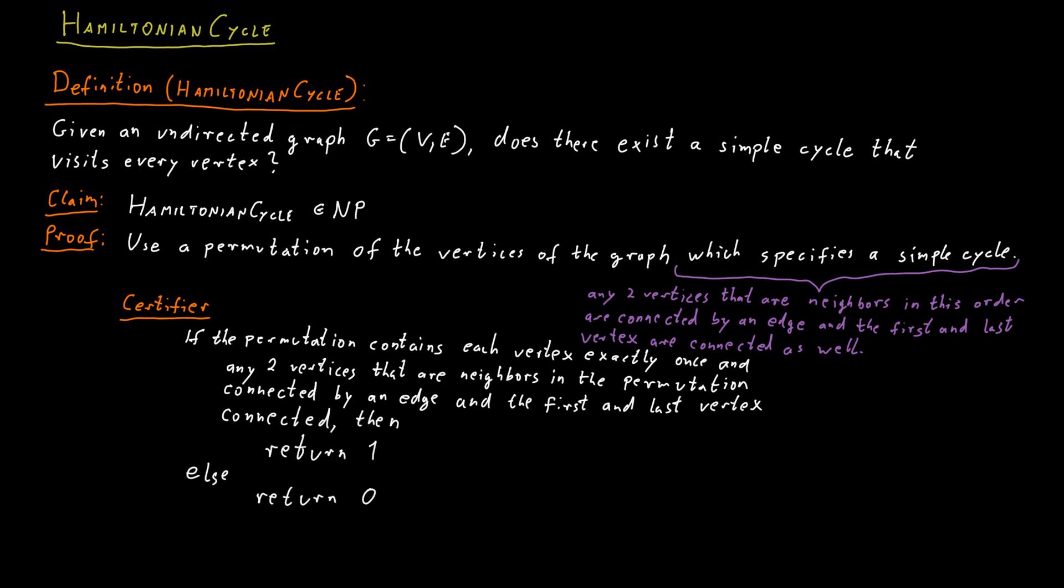And this runs in polynomial time, so the certifier works efficiently. It just needs to go through this ordered list of vertices and check for each neighboring pair whether there's an edge in the graph. So this can be done in polynomial time. So the Hamiltonian cycle problem is contained in NP.